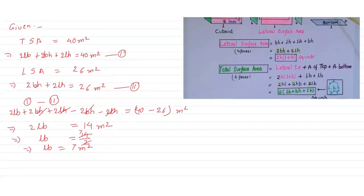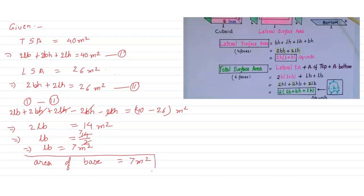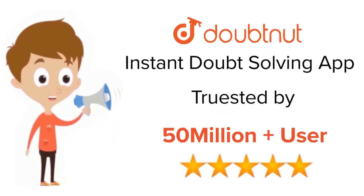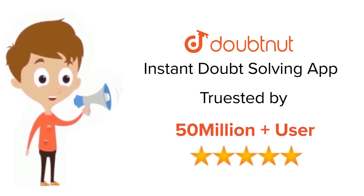So lb equals 7 metre square, therefore the area of the base is equal to 7 metre square. This is our answer. I hope you understand. Thank you. For class 6 to 12, IIT JEE and NEET level — trusted by more than 5 crore students — download the DoubtNet app today.